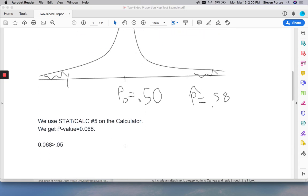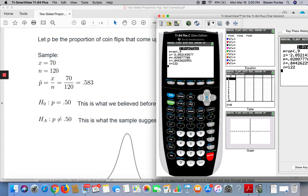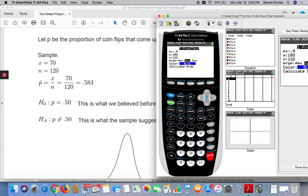We'll pull up our fancy calculator and do all the work. So we go stat over to test and number five. Our p-naught, always the number we have here, 50%. We had 70 out of 120. And we chose not equal to as the alternative hypothesis. We go to calculate. And we get our p-value. This is the only number we care about here.